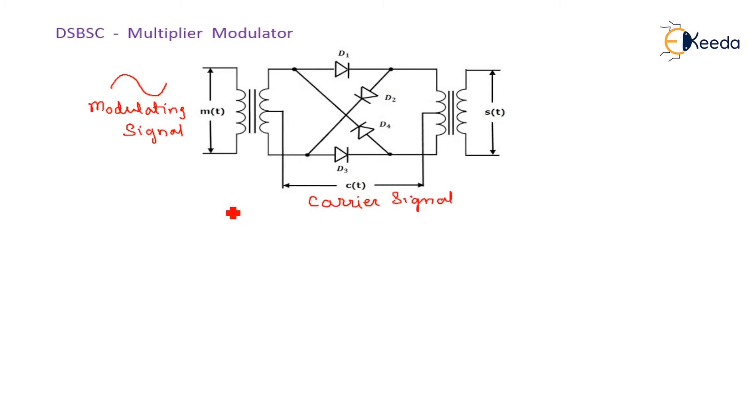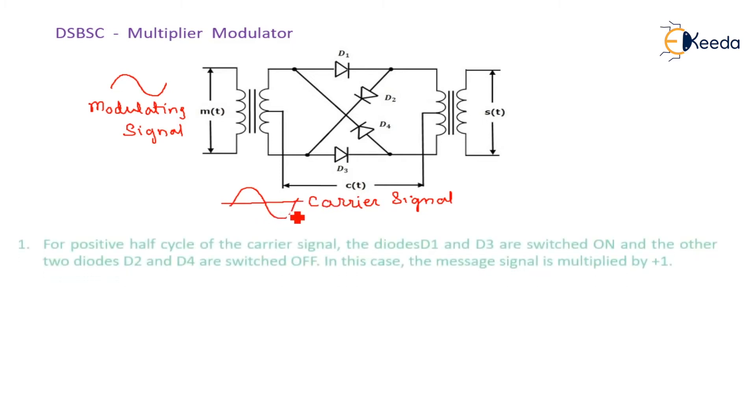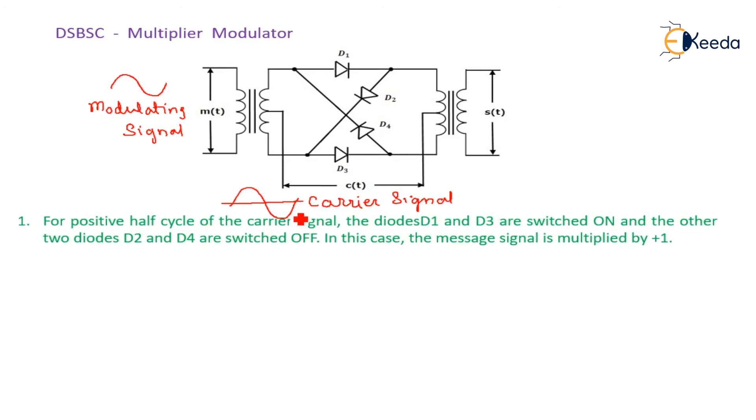So we are considering the situation of the carrier signal. For positive half cycle of this carrier signal, considering the polarity of this, this will become positive—positive, negative, positive. So here diode D1 and D3 will be conducted.